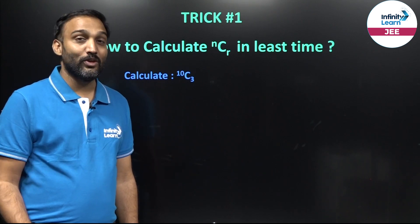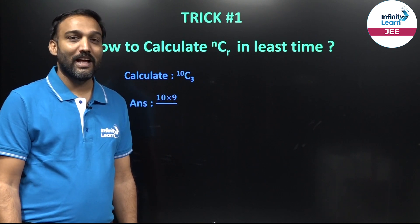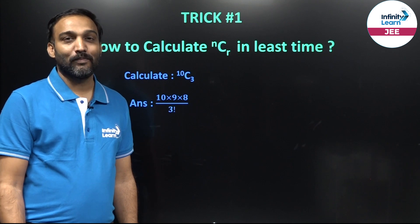So, my answer would be, numerator would be product of three natural numbers starting from 10. So, 10 into 9 into 8 divided by 3 factorial.